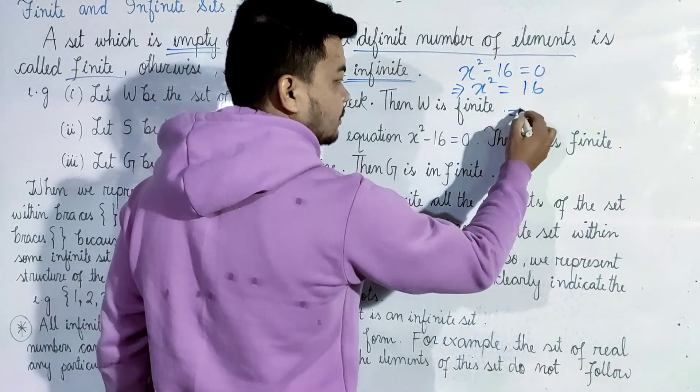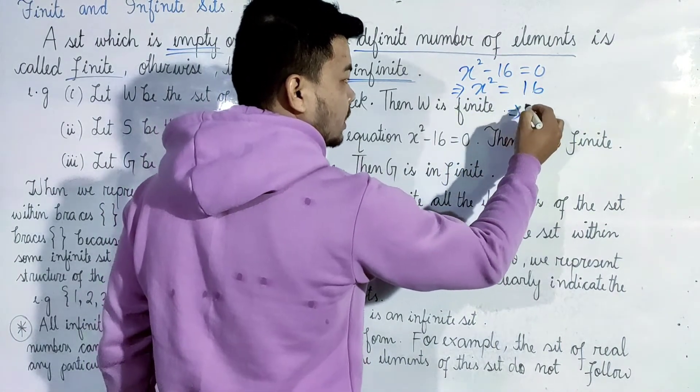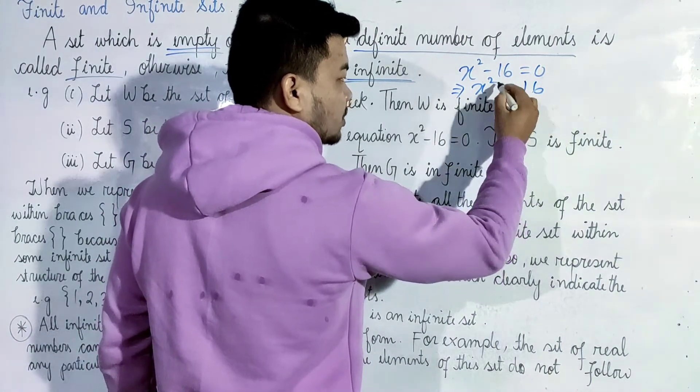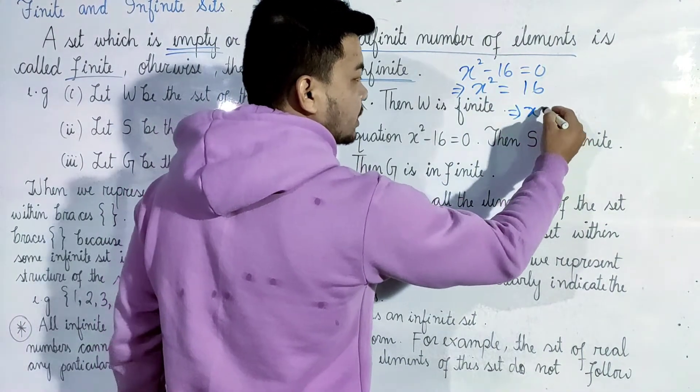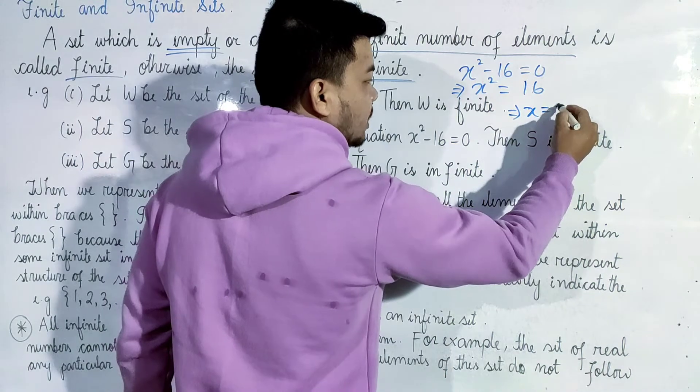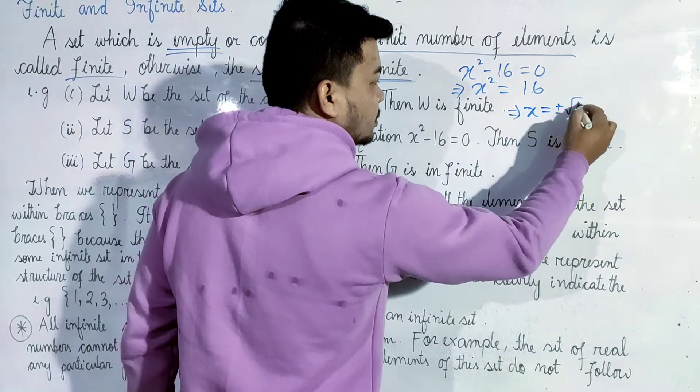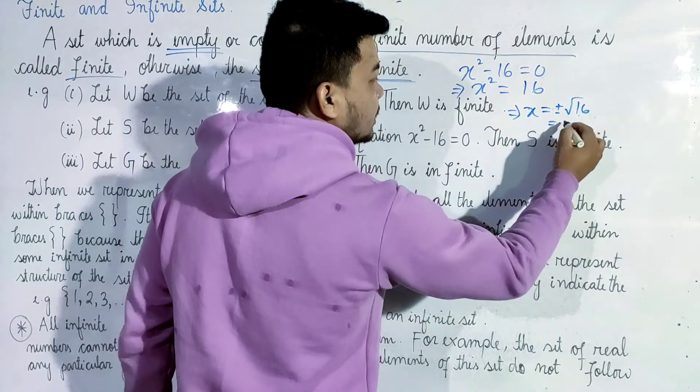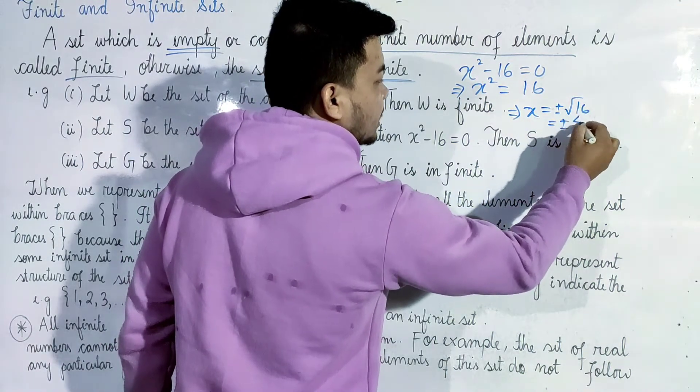The solution is plus or minus the square root of 16, which gives us plus or minus 4. So S equals {4, -4}, which is a finite set.